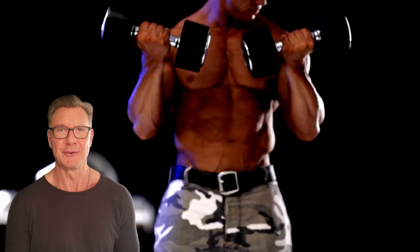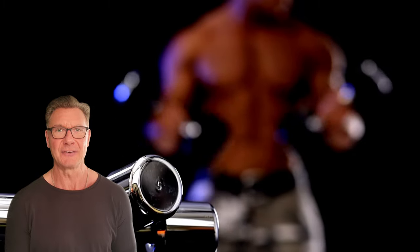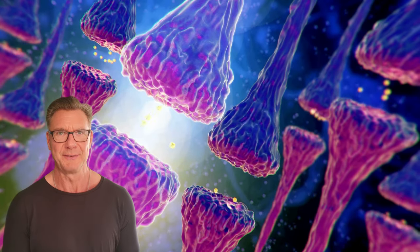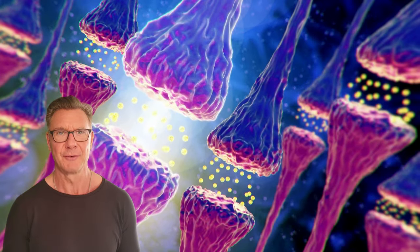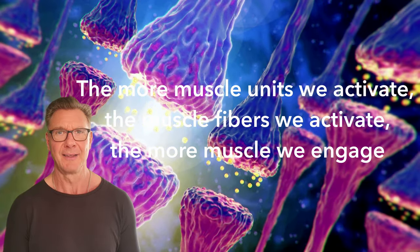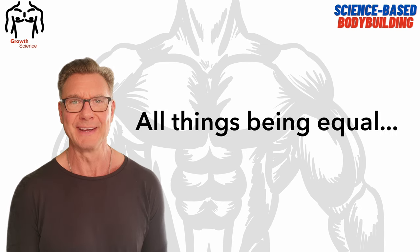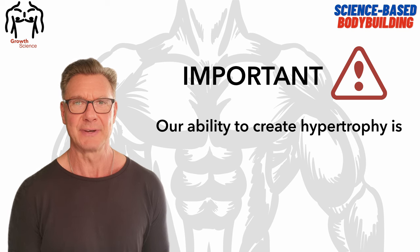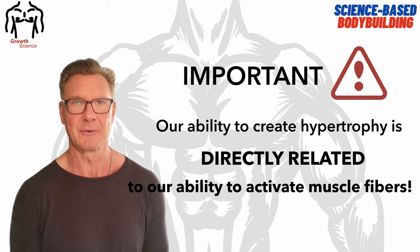Although the process of contracting a muscle is the same for all humans and indeed for most mammals, the difference lies in the individual's ability to recruit and activate motor units. The motor unit is a connection between a motor neuron and muscle fibers, so the more motor units we activate, the more muscle fibers we activate, and the more muscles we engage. Our ability to create muscle — what we call hypertrophy — is directly related to our ability to recruit muscle fibers, and that differs significantly between individuals.